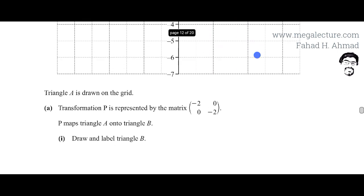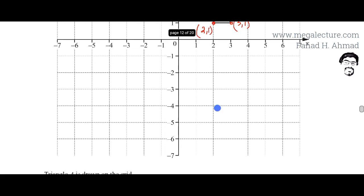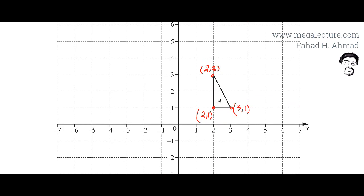The question states that Triangle A is drawn on the grid and transformation P is represented by a matrix. The matrix has first row minus 2 and 0, and second row 0 and minus 2. This transformation P maps Triangle A onto another triangle which is B. We need to draw and label Triangle B on the grid based on this transformation.